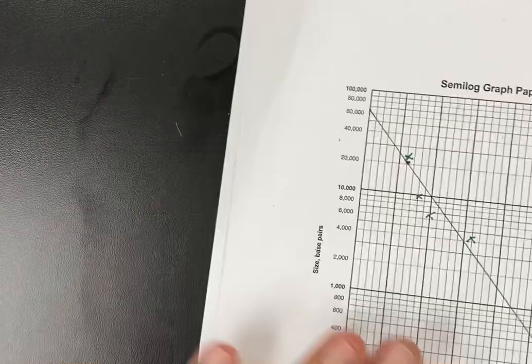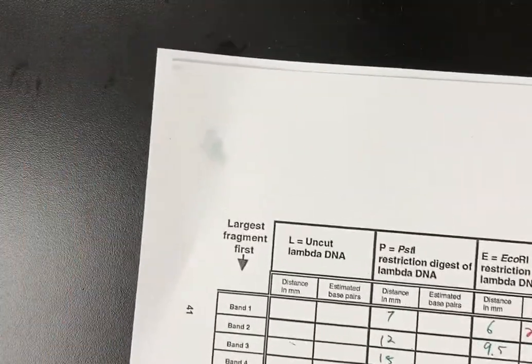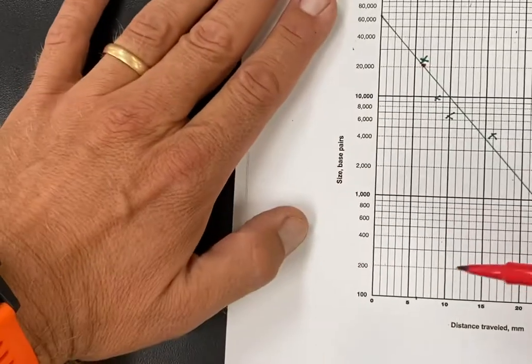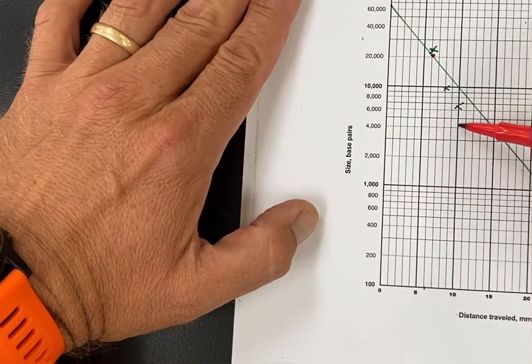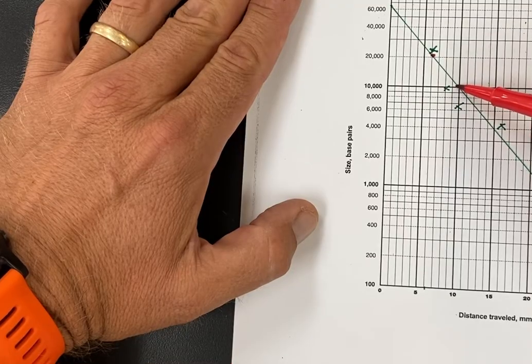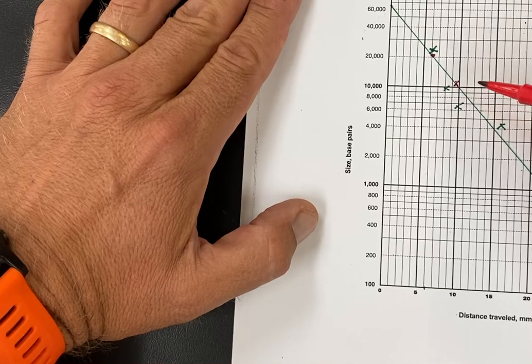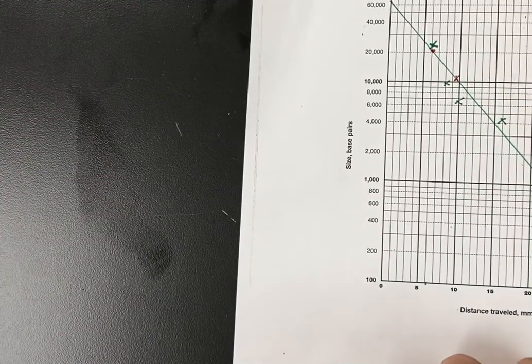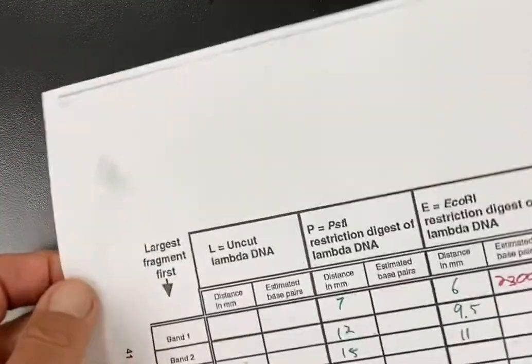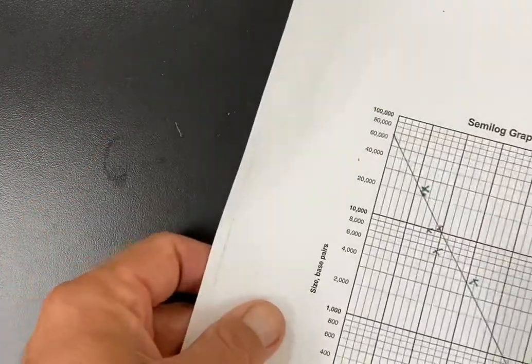My second band was at 9.5 millimeters, so if I go 9.5, where does that hit? That hits somewhere up here around ten, maybe about eleven thousand, about eleven thousand base pairs.